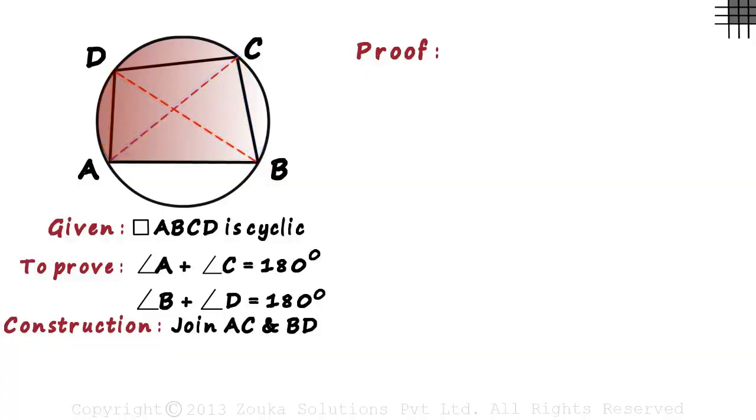Since angles formed in the same segment are equal, we can say that angle ACB is equal to angle ADB.